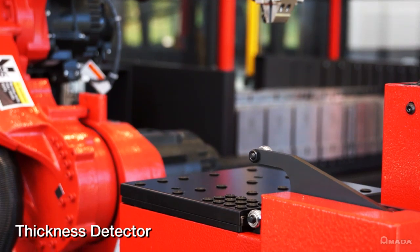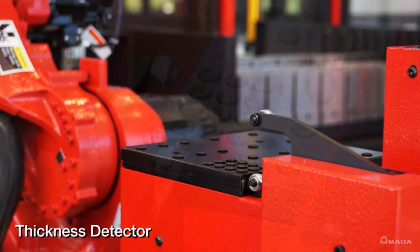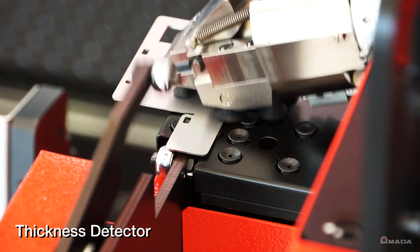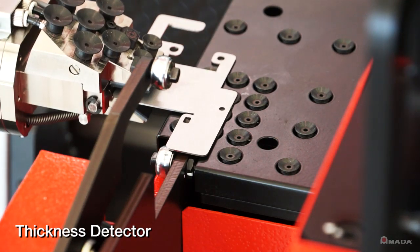When the robot picks up a part blank, the thickness detector ensures that the robot only picks up one part and that it is the correct material thickness.